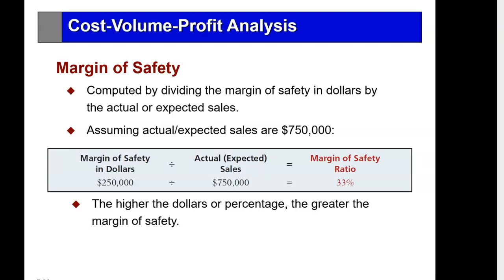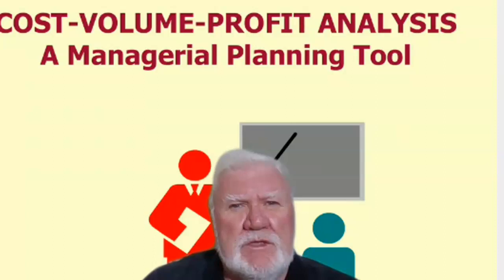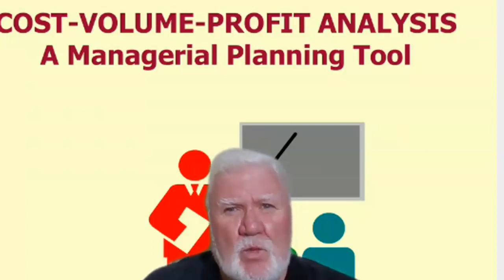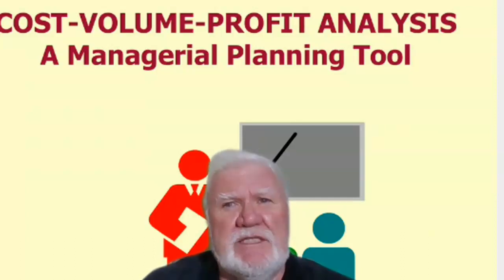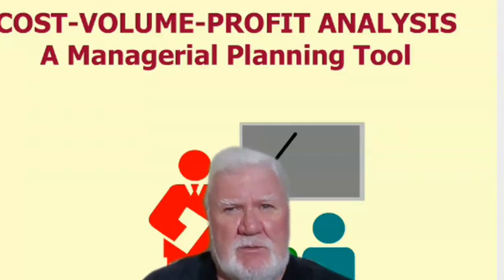The margin of safety is expressed in sales dollars — actual sales in excess of break-even — and as a percentage of actual sales. This concludes the lecture on cost-volume-profit. This module assumed the company only sells one product or provides one service. In the next module, we'll take the CVP model and adjust it for companies that sell more than one product, bringing in the idea of sales mix.